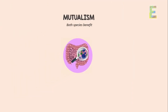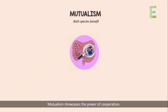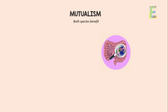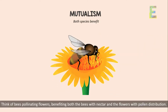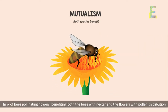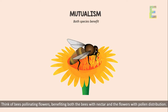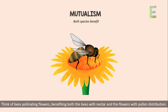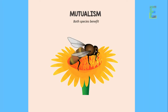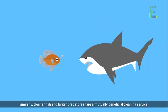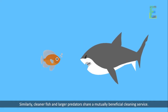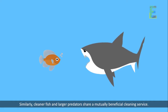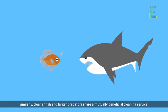Mutualism showcases the power of cooperation. Think of bees pollinating flowers, benefiting both the bees with nectar and the flowers with pollen distribution. Similarly, cleaner fish and larger predators share a mutually beneficial cleaning service.